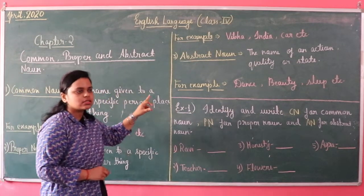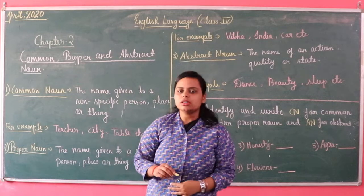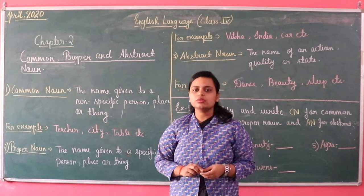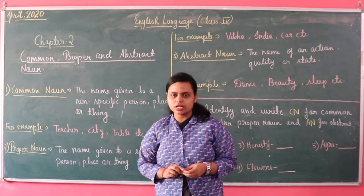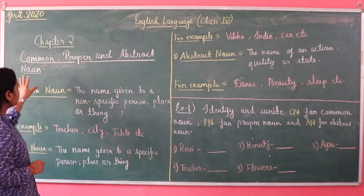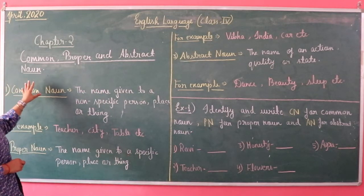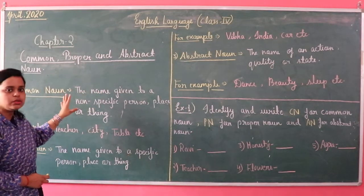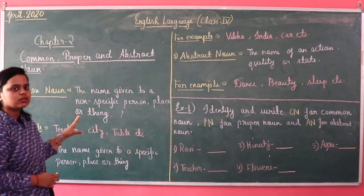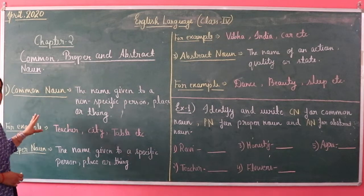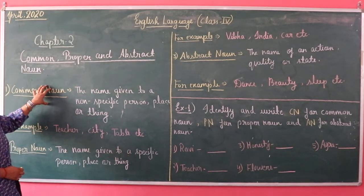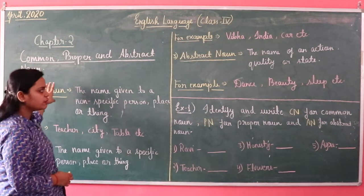As we already discussed about the noun in the first chapter, it was only the noun example and the definition of the noun. But in the second chapter, we go a little deeper into the noun, because the definition was already studied in the first chapter, but the types and kinds of noun were not given there. In the second chapter, we only have to discuss the kinds of noun.